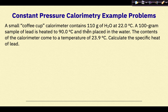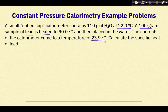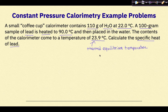A small coffee cup calorimeter contains 110 grams of water at 22 degrees Celsius. A 100 gram sample of lead is heated to 90 degrees Celsius and then placed in the water. The contents of the calorimeter come to a temperature of 23.9 degrees Celsius. Calculate the specific heat capacity of lead. Note that 23.9 degrees Celsius is the thermal equilibrium temperature — this is the temperature that ultimately results when the temperature of the water increases and the sample of lead decreases, and it represents T final for both the water and the lead.